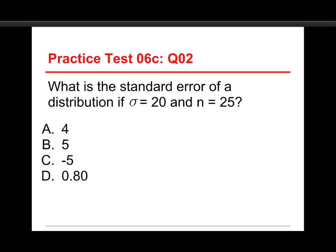Alright, next one. What is the standard error of a distribution if sigma, that's the population standard deviation, equals 20 and n equals 25? The choices are 4, 5, negative 5, and .80. The answer is 4.